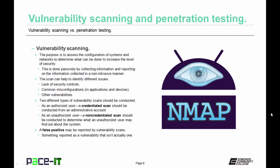There are two different types of vulnerability scans that should be conducted with the results compared with one another. The first should be done as an authorized user — this is called a credentialed scan and should be conducted from an administrative account, so the scan will have complete access to the full system. The other type should be done as an unauthorized user. This is called a non-credentialed scan and it should be conducted to determine what an unauthorized user may find out about the system.